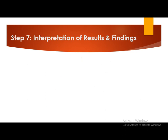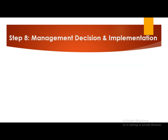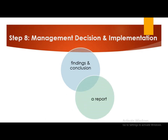Step number seven is interpretation of results and findings. The researcher interprets the statistical results of the analysis. If a hypothesis has been framed, hypothesis testing is done, and the hypothesis is either accepted or rejected. Step number eight, the last step, is management decision and its implementation. The researcher communicates the findings and conclusions through a report to management or decision makers, who then take appropriate decisions based on the findings.